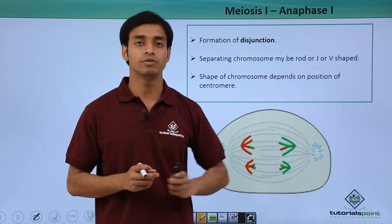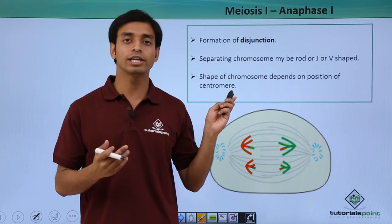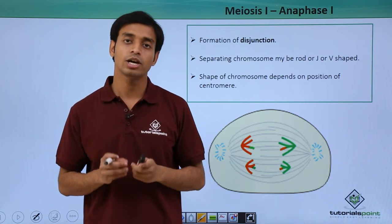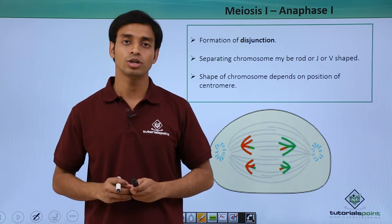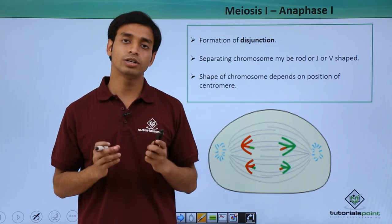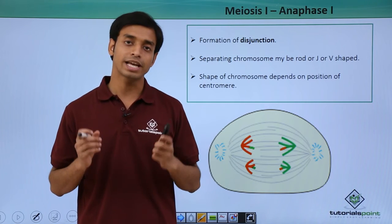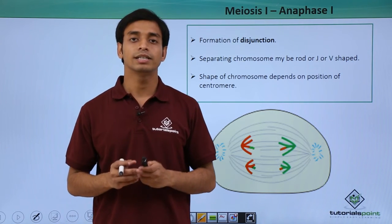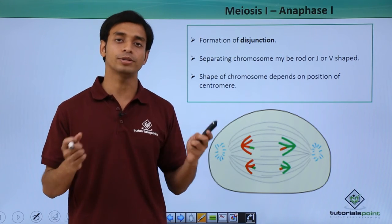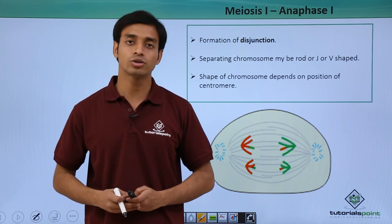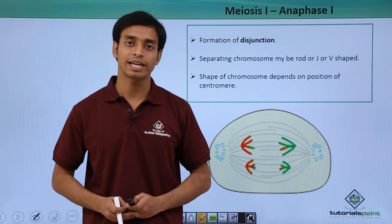And accordingly the shapes get changed on the basis of the presence of the centromere in the chromosome. So in this video we have talked about the third phase of meiosis I, which is anaphase I, and here we have seen that the homologous chromosomes get separated due to the pulling action of the spindle fibers from the opposite poles. I hope you have understood and liked this video. Thank you.